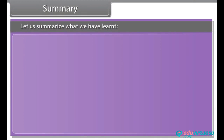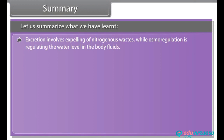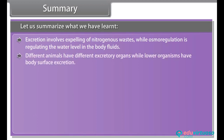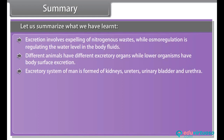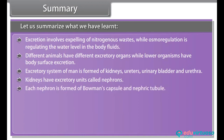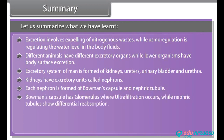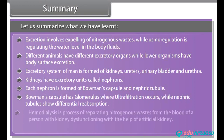In summary: excretion involves expelling nitrogenous wastes, while osmoregulation is regulating the water level in body fluids. Different animals have different excretory organs, while lower organisms have body surface excretion. The excretory system of man is formed of kidneys, ureters, urinary bladder, and urethra. Kidneys have excretory units called nephrons, each formed of Bowman's capsule and nephric tubule. Bowman's capsule has a glomerulus where ultrafiltration occurs, while nephric tubules show differential reabsorption. Haemodialysis is the process of separating nitrogenous wastes from the blood of a person with kidney dysfunction, with the help of an artificial kidney.